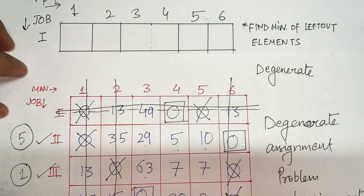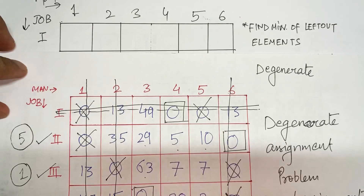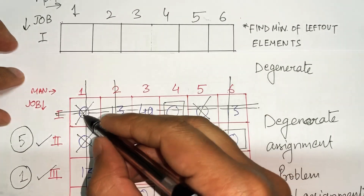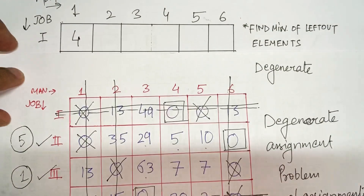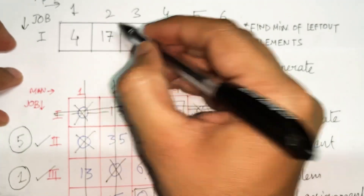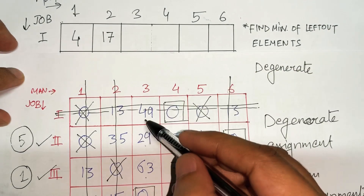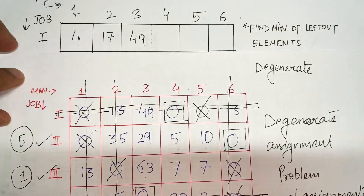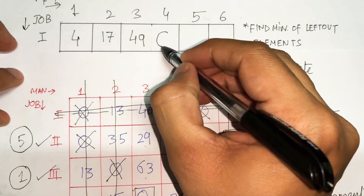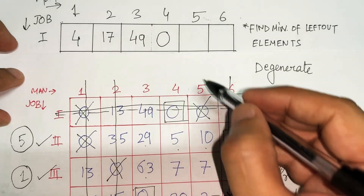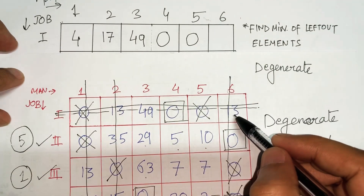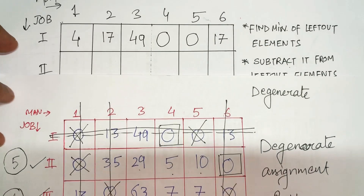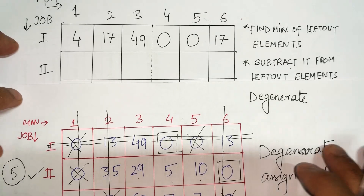Let me follow this rule and write the first row. 0 is on a cross-section, so I add 4 to it. 13 is on a cross-section, so I add 4 to it — making it 17. 49 is on-line so it remains as it is. The other 0s on the line also remain as they are.